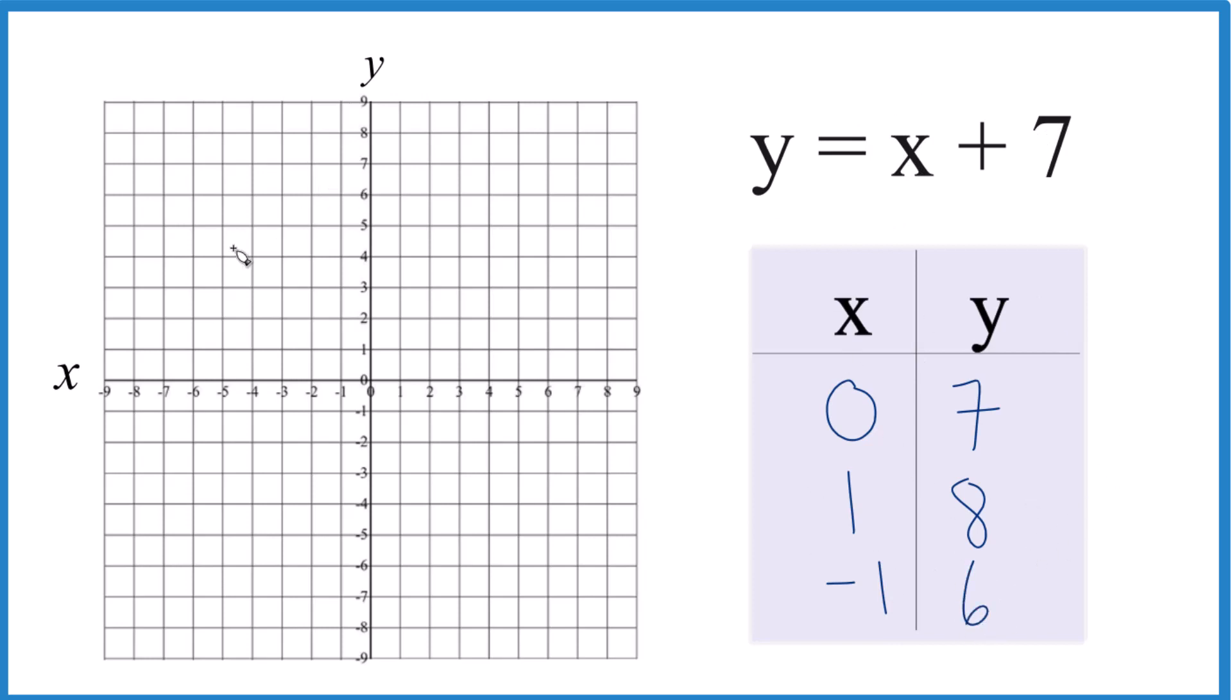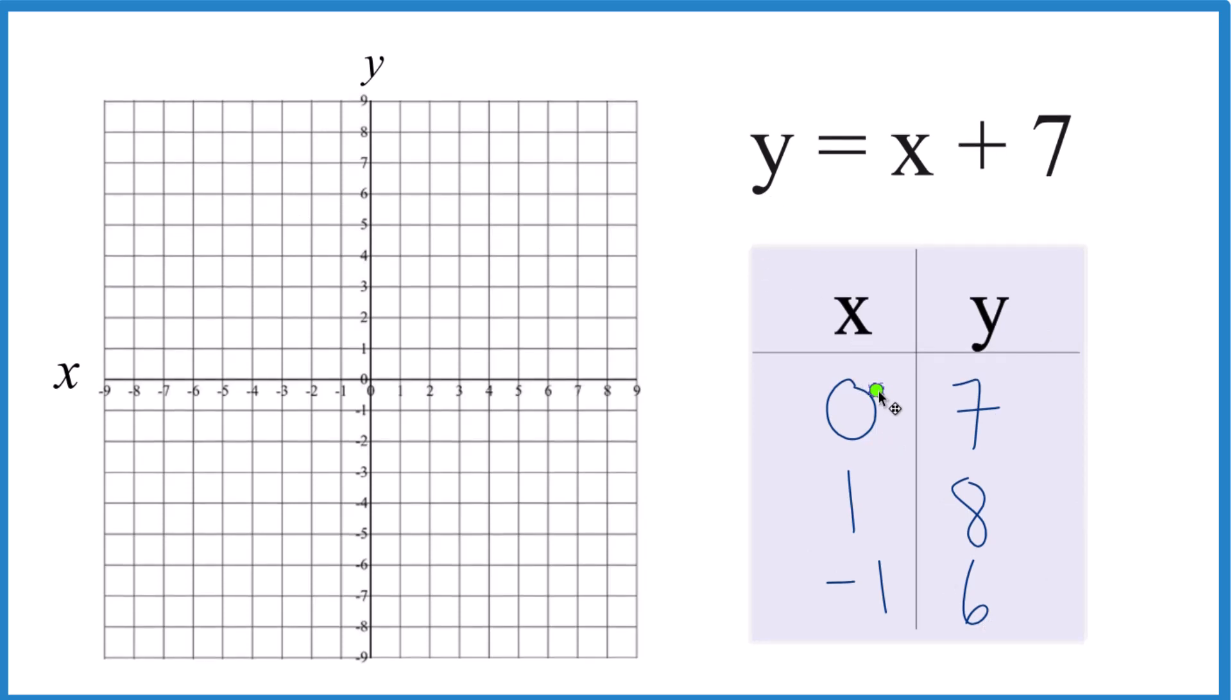So these are the points we'll graph. Let's see, we go to x is 0, y is 7. x is 0, y is 7, that's our first point.